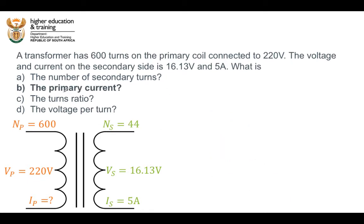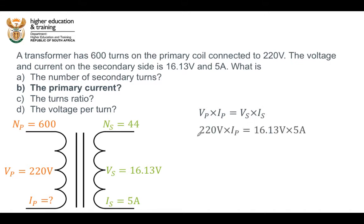Let's have a look at the second part of the question — they ask us for the primary current. We're going to need to use the power equation to work that out. We know that the voltage across the primary coil multiplied by the current through the primary coil, if there are no energy losses, will equal the voltage across the secondary coil multiplied by the current through the secondary coil. We know the voltage across the primary coil is 220 volts, and we know the voltage and current on the secondary side.